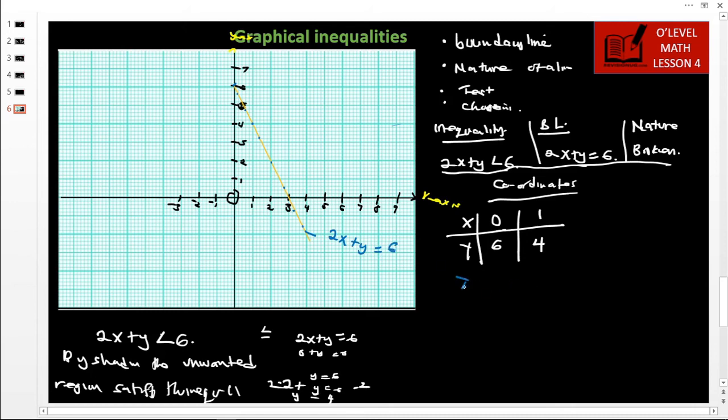Then we come to testing. We are going to test our points and choose the region which is wanted and the region which is not wanted. We choose the points in the region, so we choose 1 and 1. We test: 2x + y is less than 6, so 2(1) + 1 equals 2, is 2 less than 6?